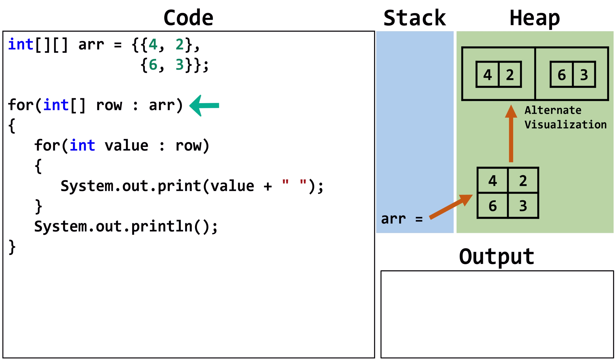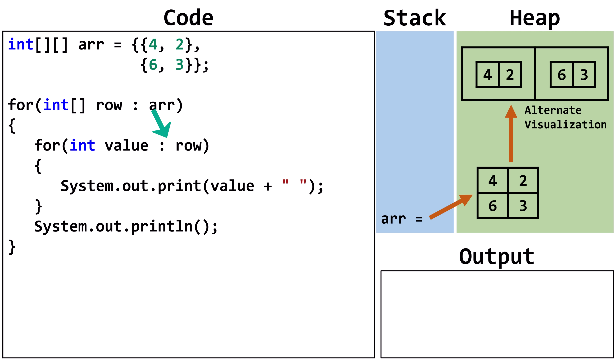Looking at the outer loop, we see the name of the array following a colon. This lets Java know which array to traverse. Before the colon, we see a temporary variable named row. This variable must be able to hold the elements contained in the outer array. The elements in the outer array are 1D arrays of int, so we declared row as an array of int. For the inner loop, we are traversing each of the inner 1D arrays of int. Our temp variable is an int, so it can hold the int values. Let's trace the code. First, we create the row variable and have it point at the element in index 0. Currently, row is pointing at the 1D array at index 0.